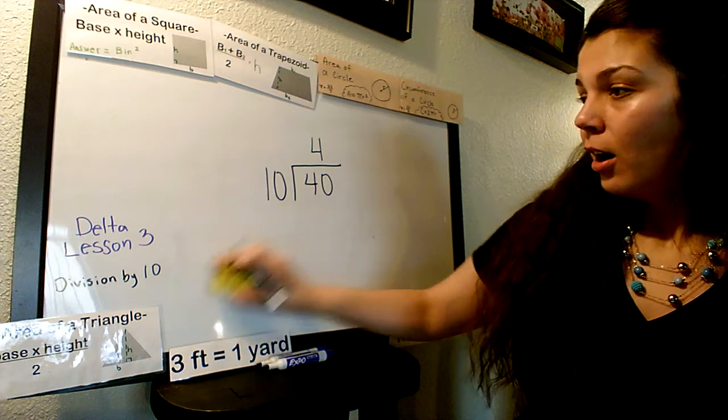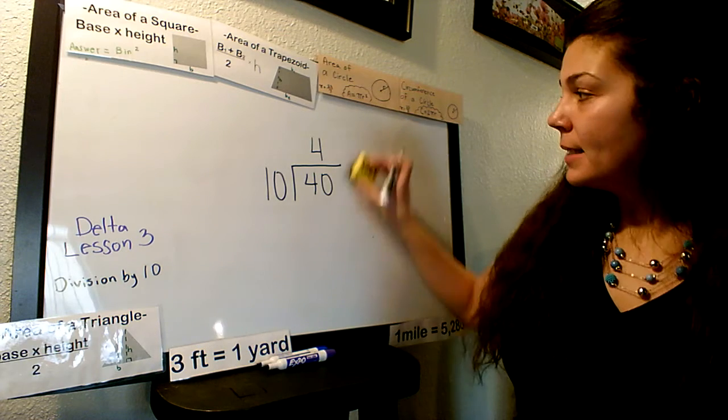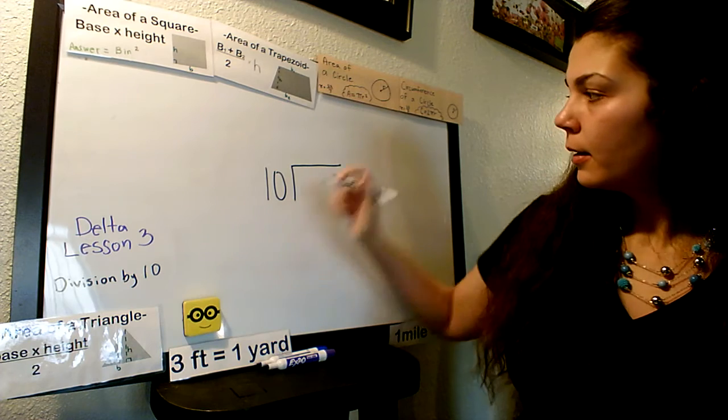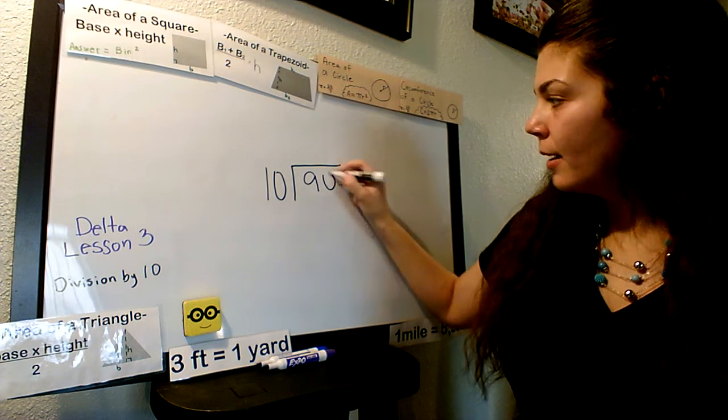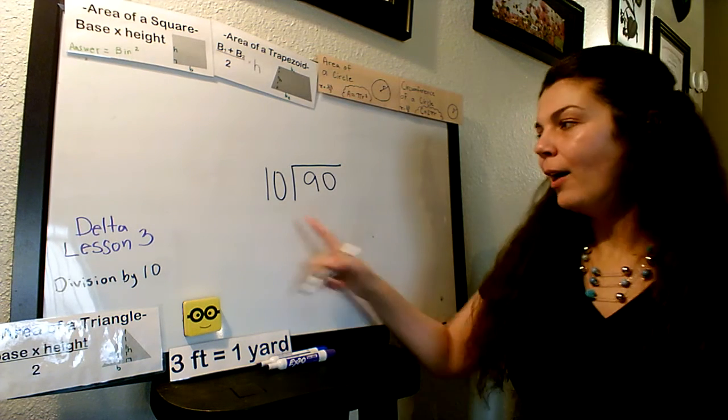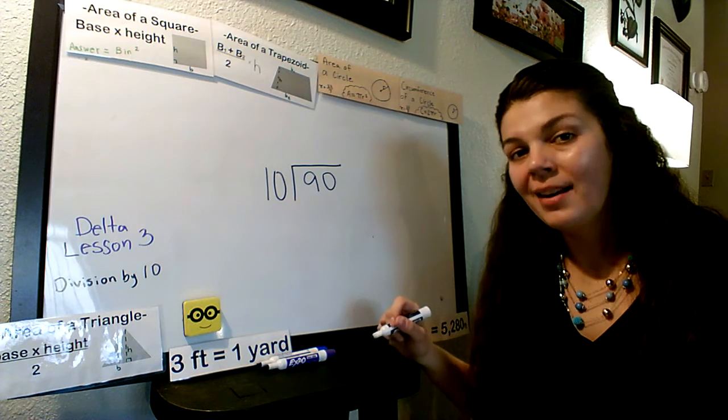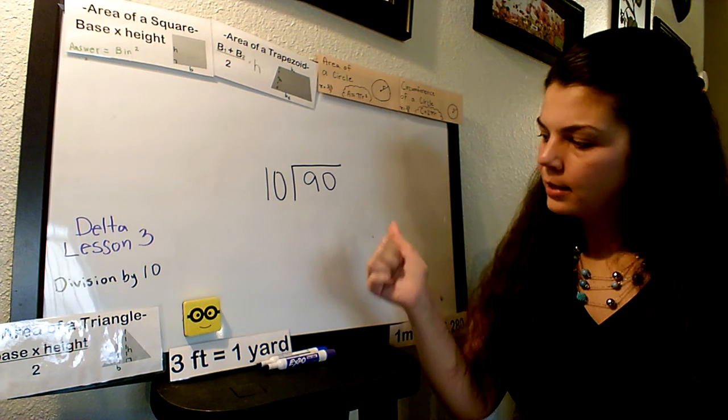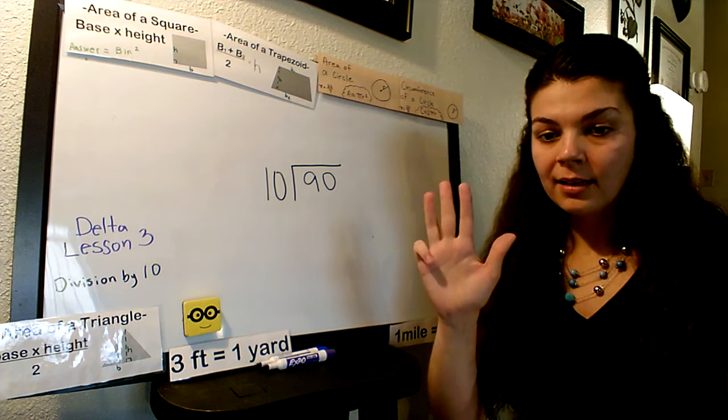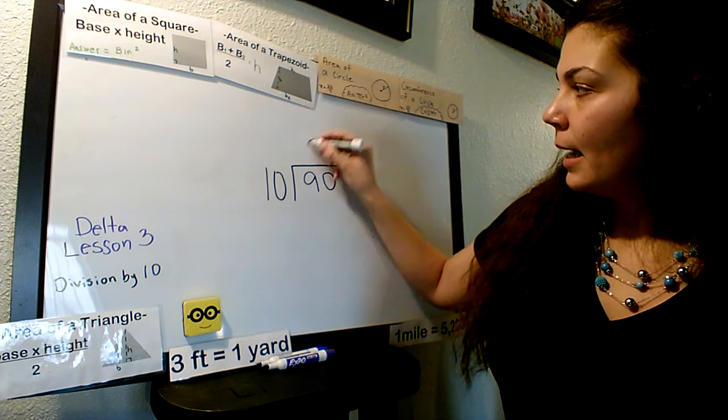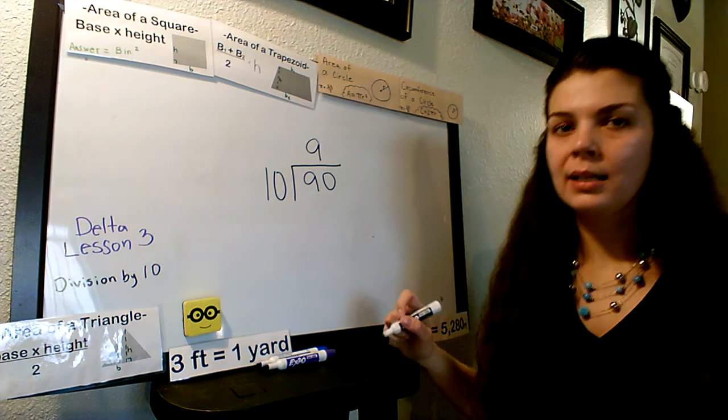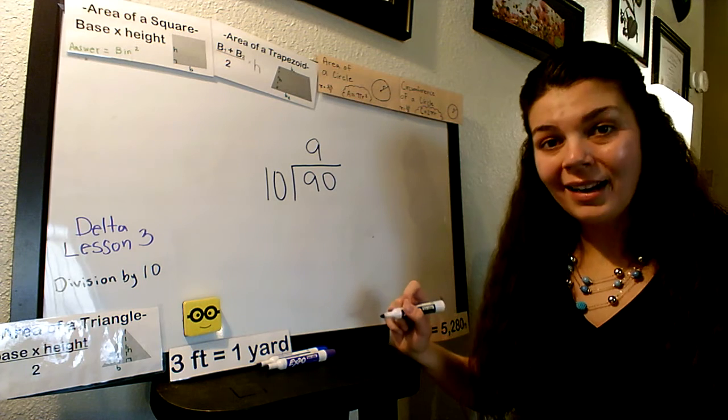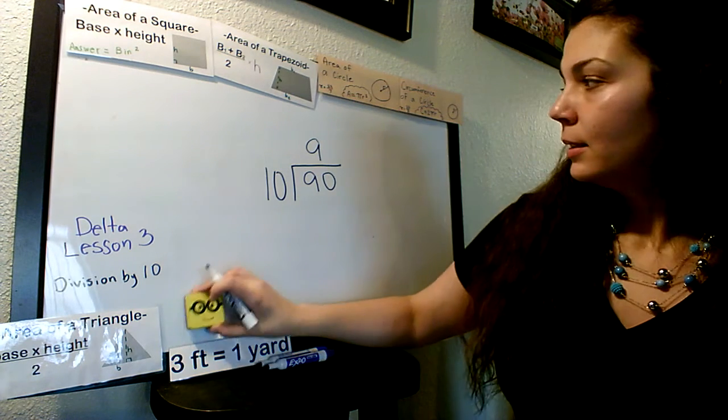But our main lesson is dividing by tens. So if I change my number, what about I change it to 90. How many tens go into 90? 10, 20, 30, 40, 50, 60, 70, 80, 90. I have nine tens that go into 90. Nine times 10 is 90. I have the correct answer.